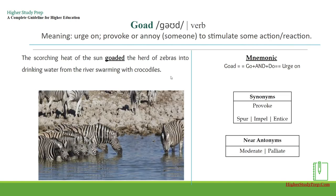The next word is goad, which is a verb, meaning urge on, or provoke or annoy someone to stimulate some action or reaction. For example, the scorching heat of the sun goaded the herd of zebras into drinking water from the river swarming with crocodiles. The mnemonic for remembering the word goad can be broken up as 'go and do,' that is, urge on. Some synonyms can be provoke, spur, impel, or entice. Some near antonyms can be moderate or palliate.